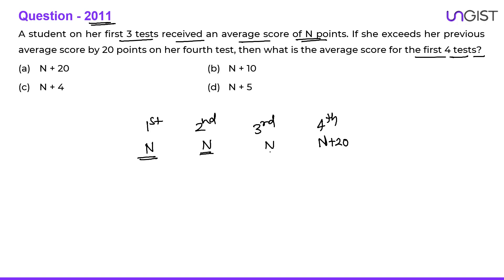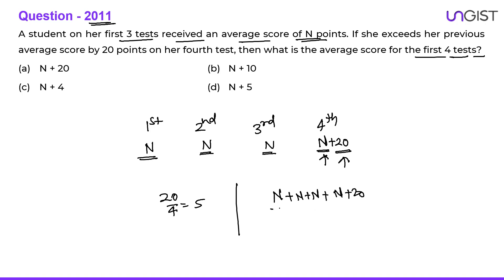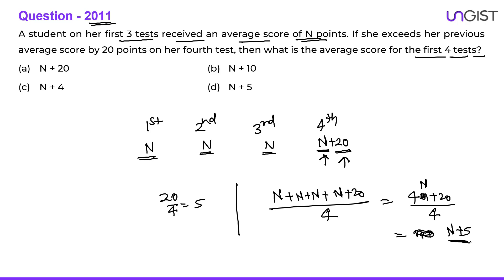The average of the first three tests is n, and on the fourth test she is scoring n plus 20 — that is, n which was the average of the earlier tests, plus 20 extra. This extra 20 will be distributed equally across all four tests, giving 20 divided by 4 equals 5 per test. So the average is: n + n + n + (n+20), divided by 4, which gives 4n + 20 divided by 4, so the average increases by 5, making it n + 5. Option D is the correct choice.